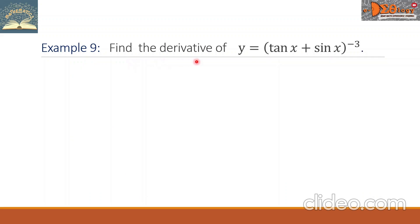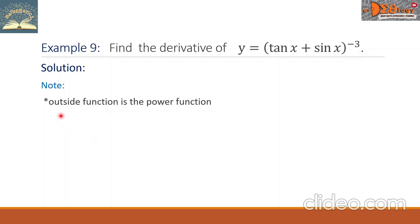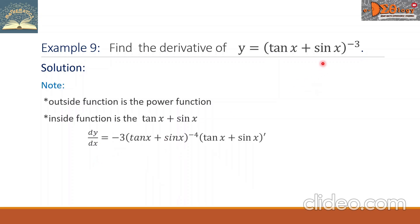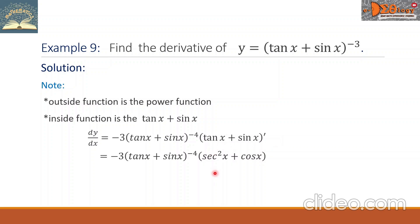Example 9: Find the derivative of y equals the quantity tan x plus sin x raised to negative 3. The outside function is the power function and the inside function is the sum tan x plus sin x. So dy over dx equals negative 3 times the quantity tan x plus sin x raised to negative 4, times the derivative of the inside function. The derivative of tan x plus sin x is secant squared x plus cosine x. This is the final answer.